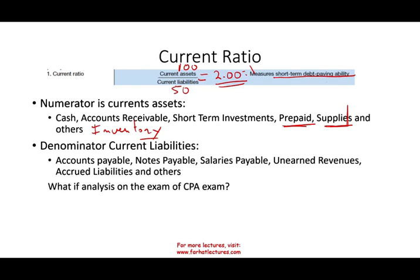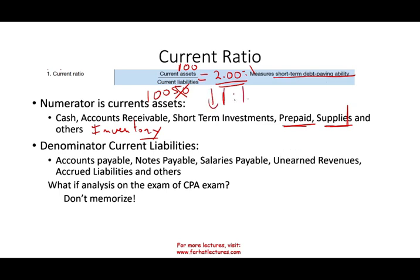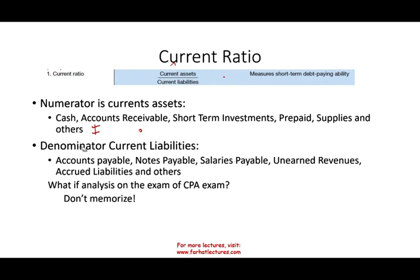On the CPA exam they might ask what happens if current liabilities increase without increasing assets. Don't memorize those scenarios. Instead, plug in easy numbers. Starting with 100 current assets and 50 current liabilities, if liabilities increase to 100, the ratio drops to 1-to-1. The same concept applies if current assets increase without increasing current liabilities — your coverage will increase. Use numbers to work through any what-if analysis.